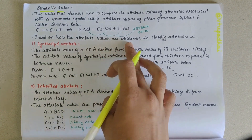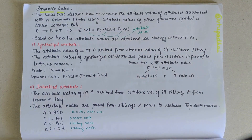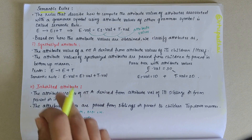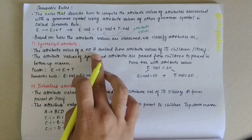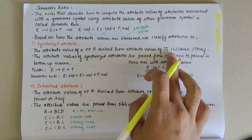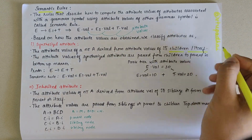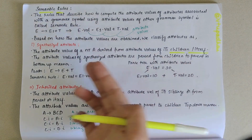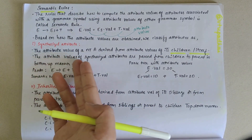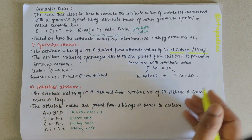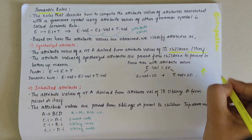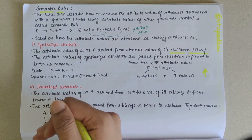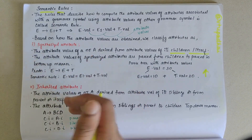Based on how attribute values are obtained, we can classify them into two types: synthesized attribute or inherited attribute. By definition, if the attribute value of a non-terminal A is derived from attribute values of its children or itself, it is called a synthesized attribute. The attribute values of synthesized attributes are passed from children to parent — that is, in a bottom-up manner.